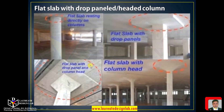In the fourth combination, the flat slab gets support from both a drop panel and a column head. This combination is the best of all. The first — flat slab directly on column — is the weakest, the second is stronger, the third is stronger still, and the fourth with both drop panel and column head is the strongest.